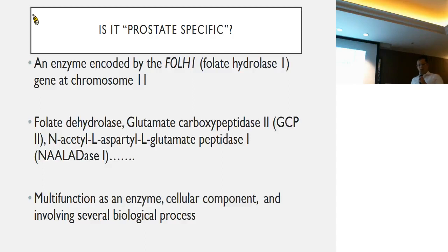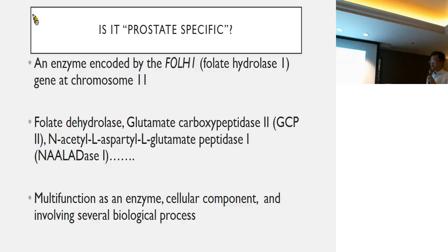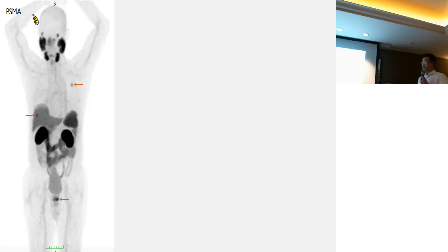In another section, I'd like to share a case with the audience. This is a topic we must always question: although this tracer is called PSMA PET — a prostate-specific membrane antigen — is it truly prostate-specific? As we know, it's an enzyme coded by the FOLH1 gene. It also has many different names such as folate hydrolase, glutamate carboxypeptidase, and others. It has multi-functional roles as an enzyme, involving several biological processes. So sometimes it's not as specific as we think.